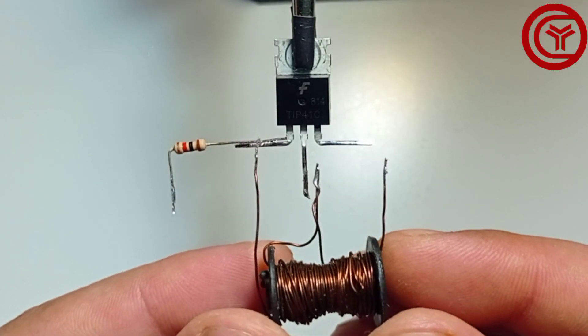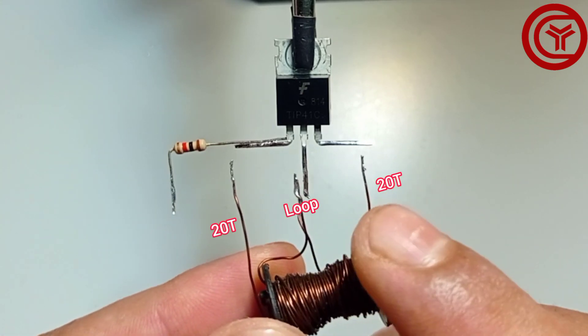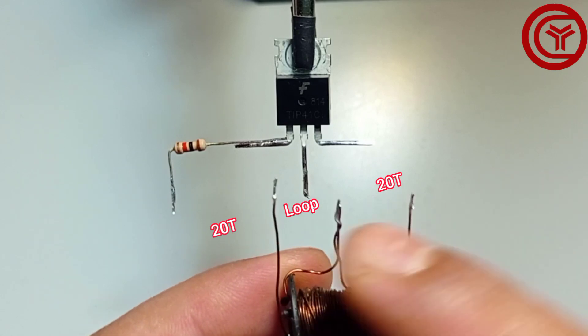Here I have used small ferrite spool and wound 24 gauge wire. Primary 20 turns and secondary 20 turns with loop at center.